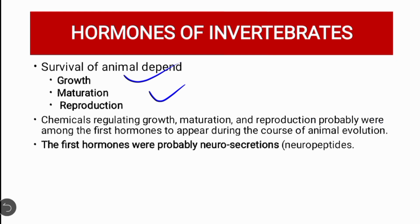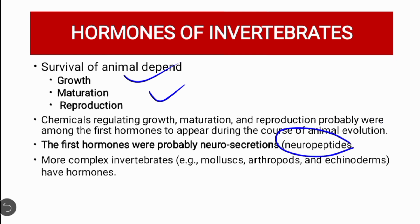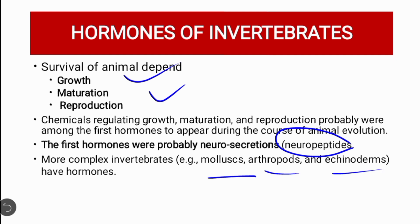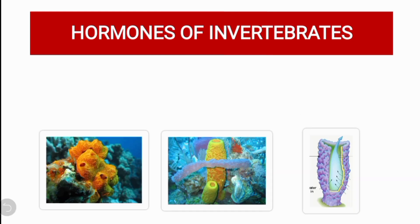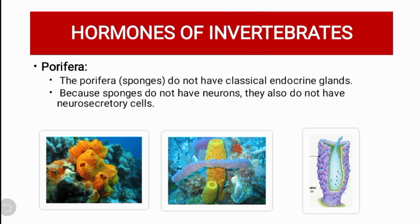The first hormones were probably the neurosecretions, which are peptide hormones. The most complex organisms, like molluscs, arthropods, and echinoderms, have hormones. However, the simpler invertebrates do not have any kind of special chemical for their endocrine system or for their different physiological activities.